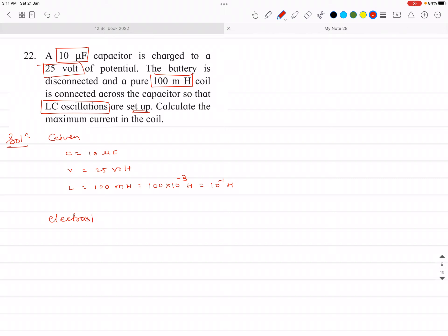Electrostatic energy is equal to magnetic field energy. So we write both formulas. Electrostatic energy stored in the capacitor we can write half CV squared, and magnetic field energy we can write half LI squared.